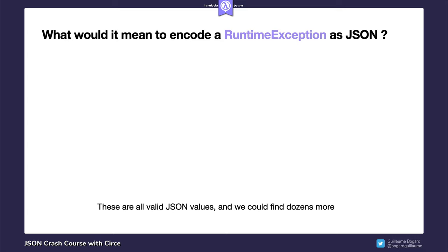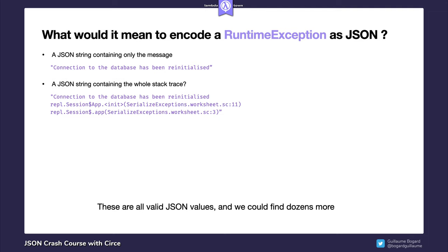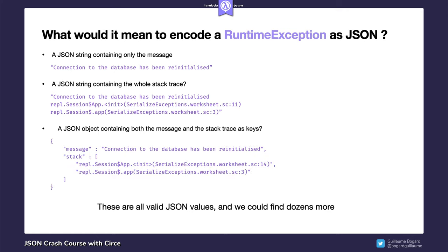To understand why things work that way, let's ask ourselves: what would it mean to encode a runtime exception into a JSON value? One could choose to encode only the message as a string, or they could also encode the whole stack trace, or they could turn the error into a JSON object with several keys — one for the message and one for the stack trace. These are all valid JSON values. I've chosen runtime exception as an arbitrary example, but you get the idea. There is not one definitive way of encoding a given object into a valid JSON value.